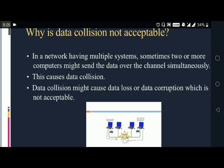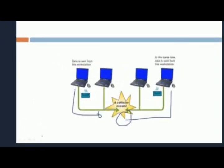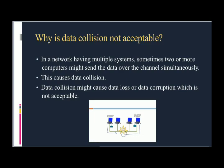First of all, let's see why data collision is not acceptable. In a network having multiple systems, sometimes two or more computers might send data over the channel simultaneously. This causes data collision, which might cause data loss or data corruption, which is not acceptable. To reduce the inconvenience caused by data collision, technologies like CSMA CD and CSMA CA were introduced.